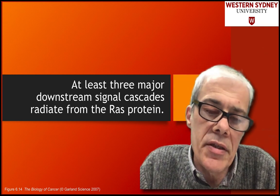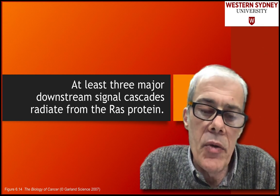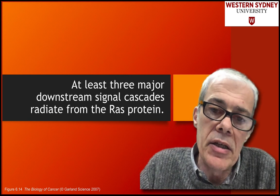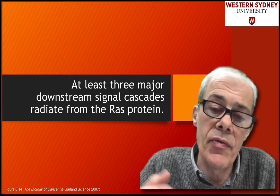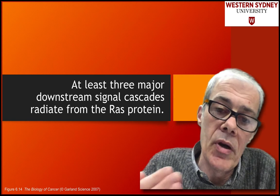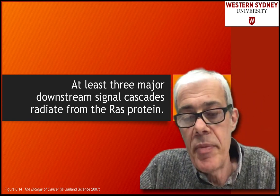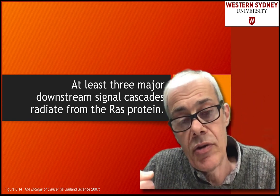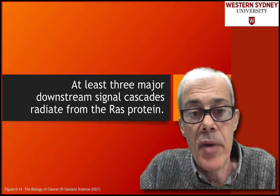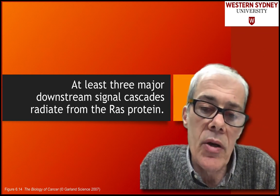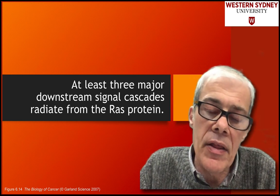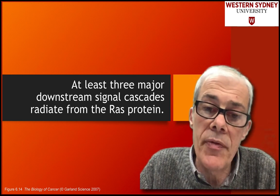So in the previous video, we looked at the upstream signaling down to RAS — from the tyrosine kinase receptor through GRB2 and SOS down to RAS. So we looked at how RAS is activated from upstream, and now we're going to have a quick look at some of the signaling downstream from RAS.